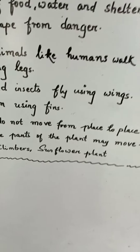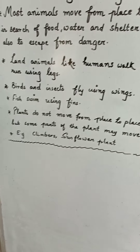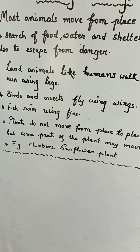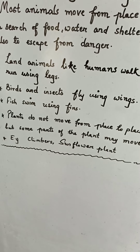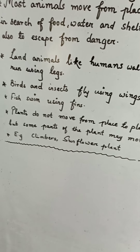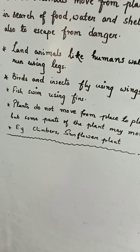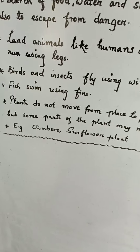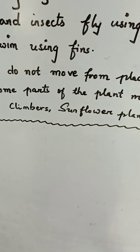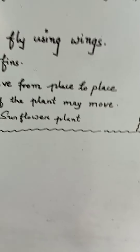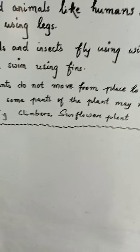Now, plants do not move from place to place. For example, a mango tree — if it is in one place, it will stay in that place. It will not move from place to place, although it is a living thing. But there are some exceptions where some parts of the plant may move.